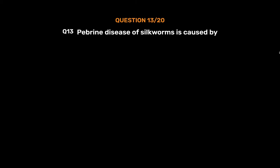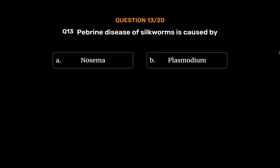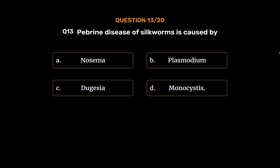Question 13: Pebrine disease of silkworms is caused by — Option A: Nosema. Option B: Plasmodium. Option C: Dugacea. Option D: Monocystis.